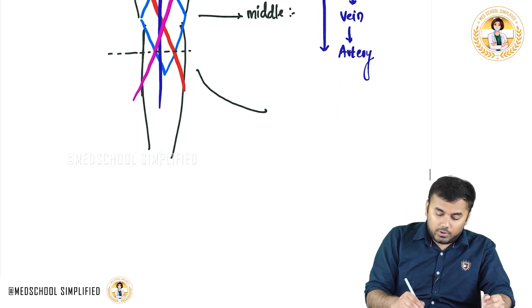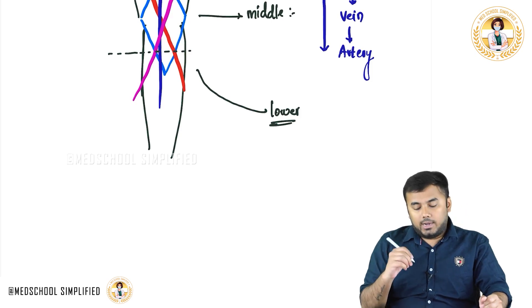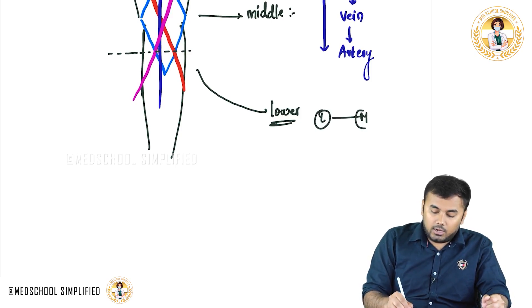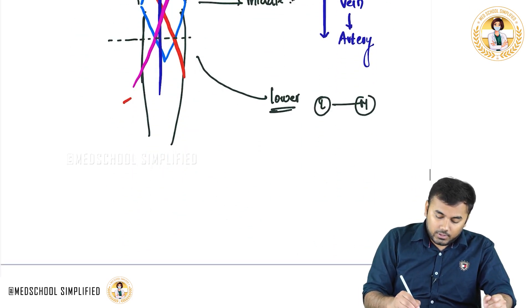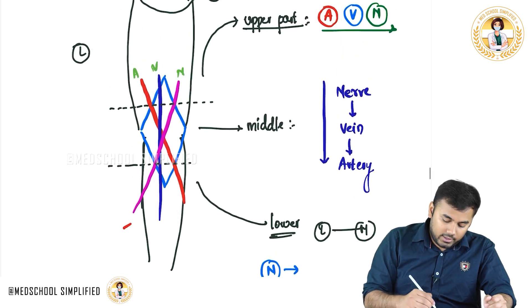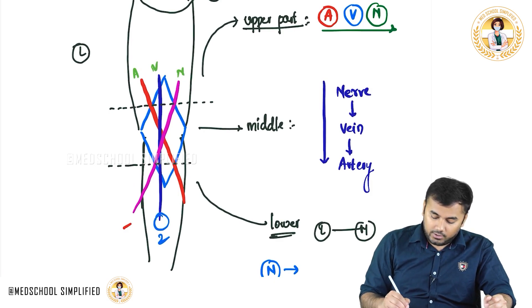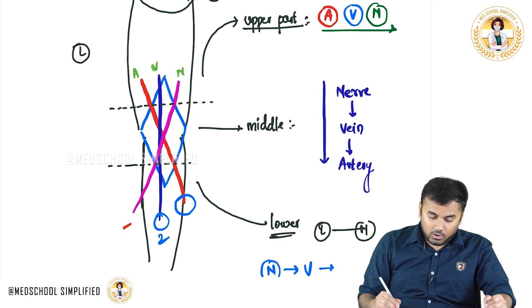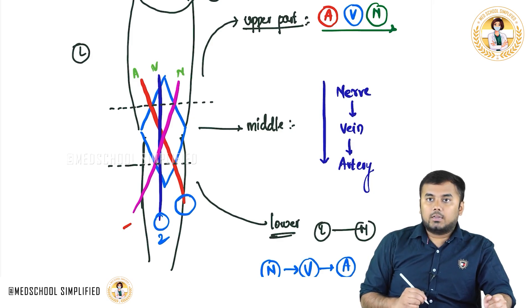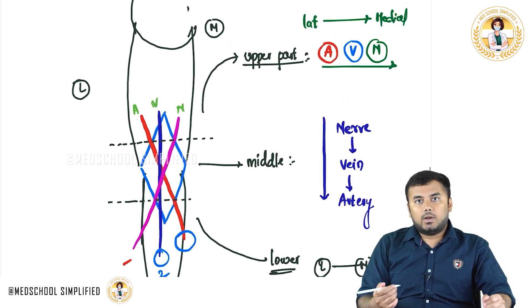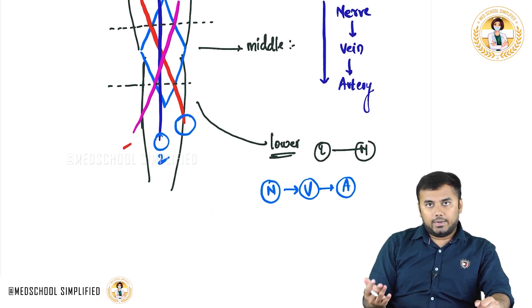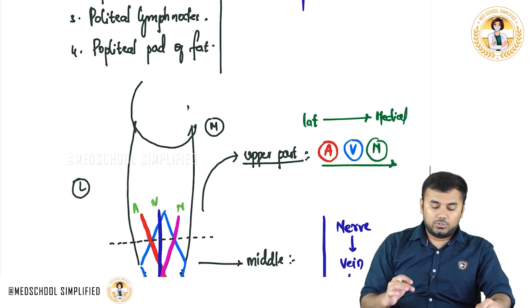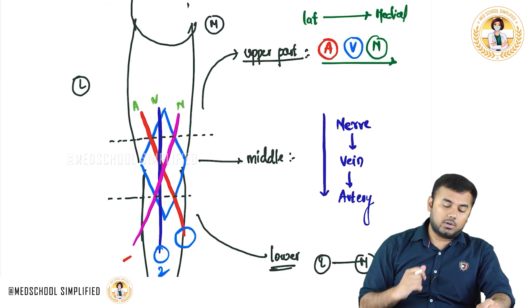When it comes to the lower part, from lateral to medial, the structures are: laterally you have the nerve, then vein, then artery medially. You can see the difference between the upper part and lower part — in the upper part it is artery, vein, nerve; and by the time it comes to the lower part it is nerve, vein, artery. So it is completely reversed. This is one very important transition you need to know from the top part to the bottom part.